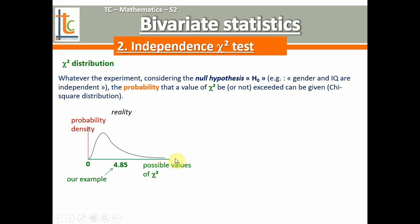Of course, you can't have an infinite distance between both tables. But chi-square is a continuous probability distribution, so it's based on values on R+, from zero to infinity. Our value of 4.85 can be located in the chi-square distribution. The chi-square distribution can tell you that, in your case, there were approximately 97% of samples that would have given a chi-square value less than 4.85.